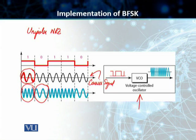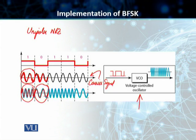The modulated signal for a 1 contains 1 cycle, 2 cycles, 3 cycles, and 4 cycles — the frequency is increased or varied. In the case of 0, we have got 2 cycles in the carrier signal, and the modulated signal contains 2 cycles as well. Frequency remains unchanged for one signal element, whereas the frequency is increased for the other signal element, using a carrier signal produced from the voltage-controlled oscillator.